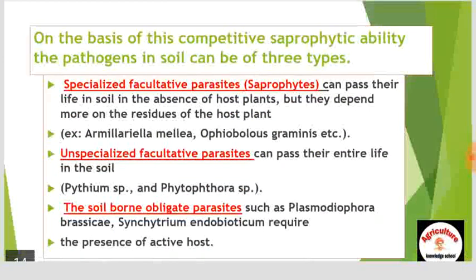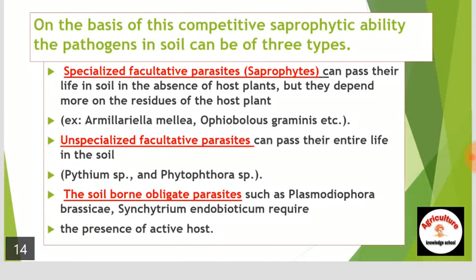On the basis of competitive saprophytic ability, pathogens in soil can be of three types. First, specialized facultative parasites or saprophytes can pass their life in soil in the absence of host plants but depend more on host plant residues — for example, Armillaria mellea and Ophiobolus graminis. Second, unspecialized facultative parasites can pass their entire life in the soil — for example, Pythium species and Phytophthora. Third, soil-borne obligate parasites such as Plasmodiophora brassicae (club root of cabbage) and Synchytrium endobioticum require the presence of an active host.